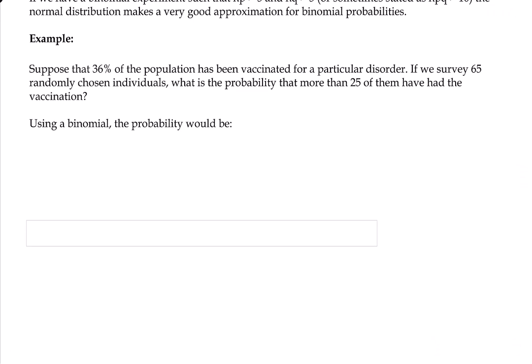And we can use binomials because there's a couple of things that are happening here. First off, either somebody has the vaccination or they don't. So there's one of two things that can happen. Each person that we choose randomly to survey has an equal chance of having the vaccination versus not having the vaccination. So these are independent trials. And we're asking 65 people. So we have a set number of trials to begin with. So this meets the criteria of a binomial experiment. So we can use binomial probabilities to come up with the answer here.